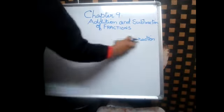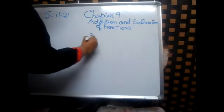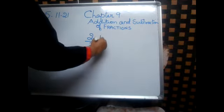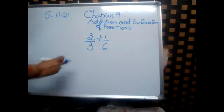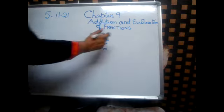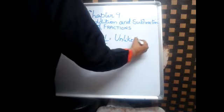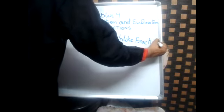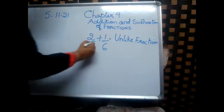But when the denominators are different, for example 2 by 3 plus 1 by 6, the denominators are different. When the denominators are different, this is called unlike fractions. So, the moment you see the denominators are different, you have to circle the denominators. Let us circle the denominators first because they are different.